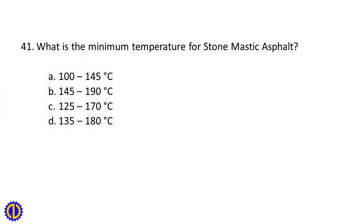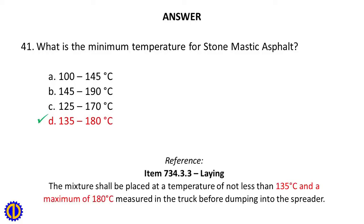Question 41: What is the minimum temperature for stone mastic asphalt? A. 100–145°C, B. 145–190°C, C. 125–170°C, D. 135–180°C. Answer: D. 135–180°C. Reference: Item 734.3.3 Laying — The mixture shall be placed at a temperature of not less than 135°C and a maximum of 180°C, measured in the truck before dumping into the spreader.